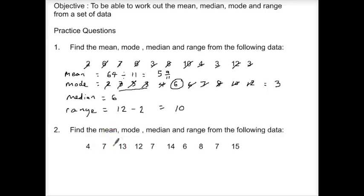Second question then, number 2. Exactly the same type of thing so we're going to look at the mean first of all. And our mean from this set of data, well if we add these up we get a total of 93. This time there's 10 numbers in the list so we have 93 divided by 10.